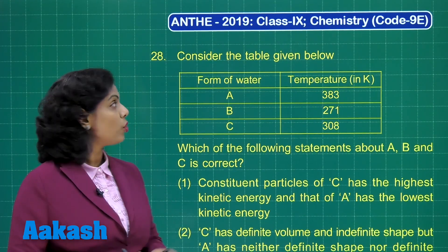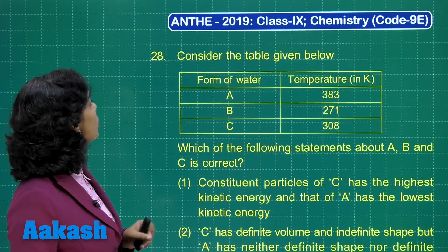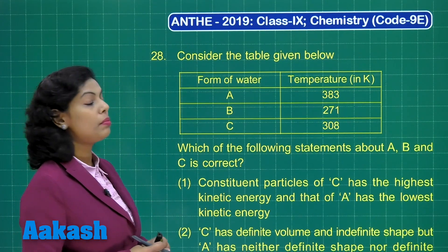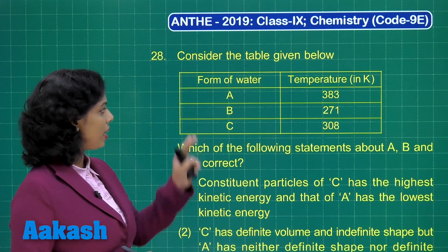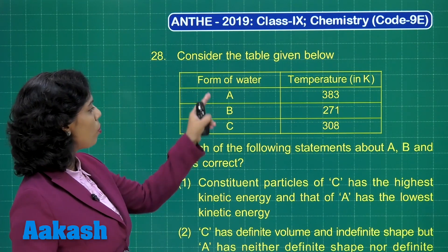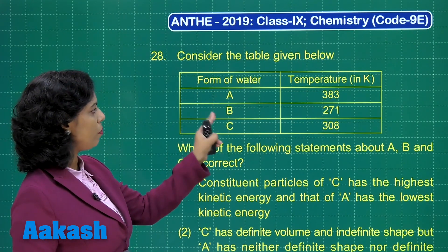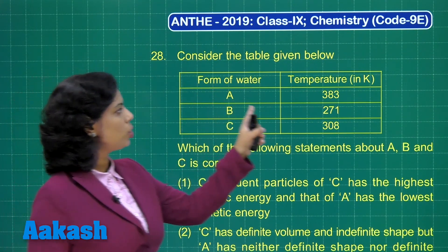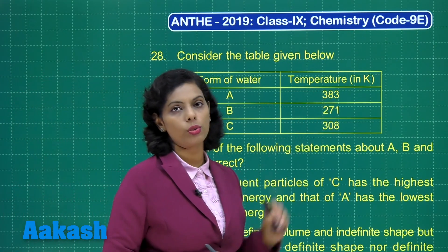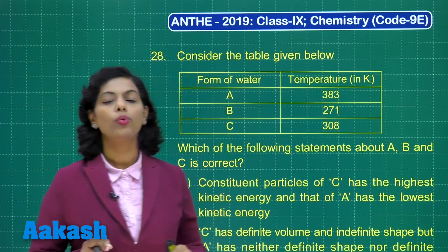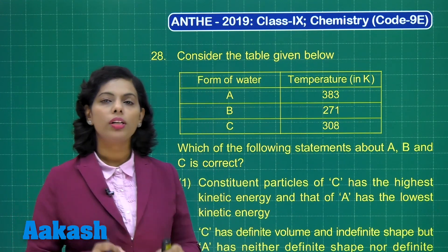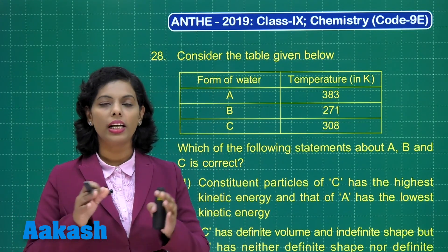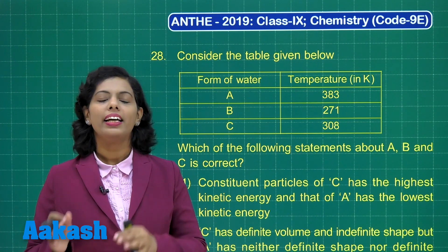Now students, it's time for question number 28. Consider the table given below. We have this table with forms of water A, B, and C given, and the temperatures in Kelvin are also given. We know that water exists in three different states: solid, liquid, and gas.